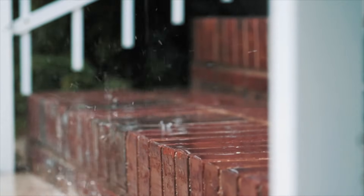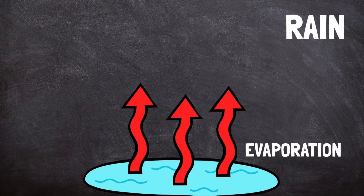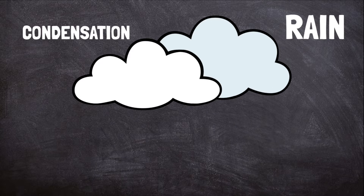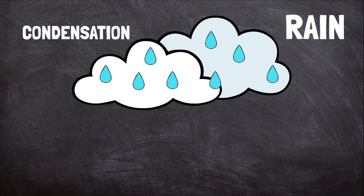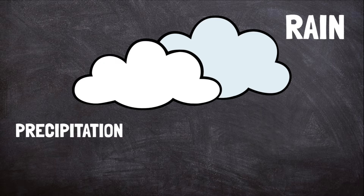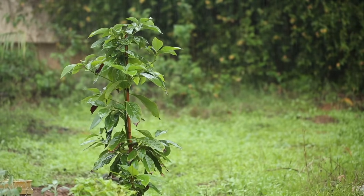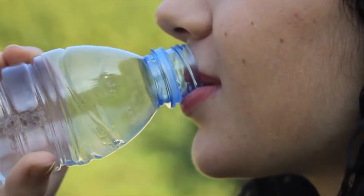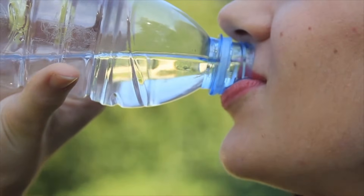Rain is the most common form of precipitation. To make rain, water from the earth's surface must evaporate, or turn into water vapor that rises up into the air. This water vapor condenses. When this happens, the vapor turns back into water droplets which form clouds. If too many water droplets gather in the clouds, they begin to fall back to earth's surface as rain. Rain is extremely important to life on earth — it helps plants grow and gives animals, including humans, fresh water to drink.